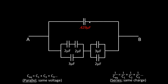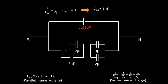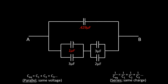Now the top branch is taken care of. Let's move on to the bottom branch. I'll start with the two microfarad capacitors that are in a series connection. Since they're in series, we add inversely: 1/2 + 1/2 = 1. The inverse of 1 is just 1. So the equivalent capacitance is 1 microfarad for those two. We can go ahead and replace that.